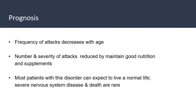The prognosis of Hartnup disease is good, and the frequency of attacks usually decreases with age. The number and severity of attacks can be reduced by maintaining good nutrition and supplementing with niacin or nicotinamide. Most patients with this disorder can expect to live a normal life with no disability. Rarely, there have been reports of severe nervous system disease and death within affected families, though this is very uncommon.